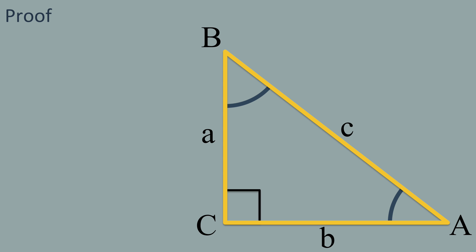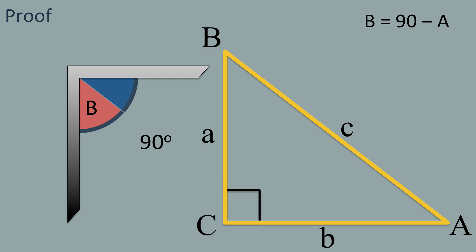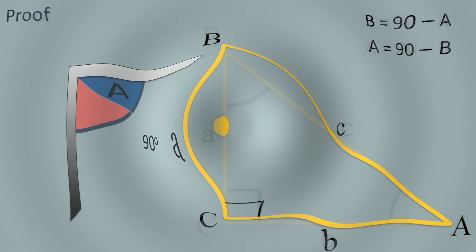In the right angle triangle ABC, angles a and B are complementary—that is, they add up to 90 degrees. So we can see that B equals 90 minus a degrees, and a equals 90 minus b degrees.